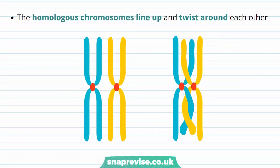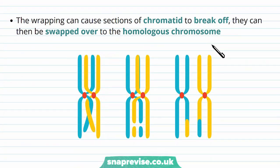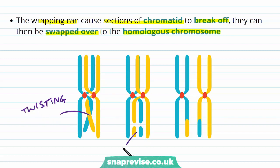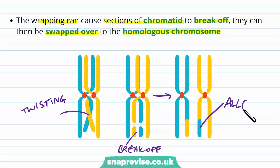The homologous chromosomes line up with each other and twist around at the point where crossing over will occur. The wrapping or twisting can cause sections of the chromatid to break off, and then they get swapped over to the homologous chromosome, exchanging their DNA. Bits of it break off and get swapped with each other, so these still code for the same genes, but the alleles may have been swapped around.